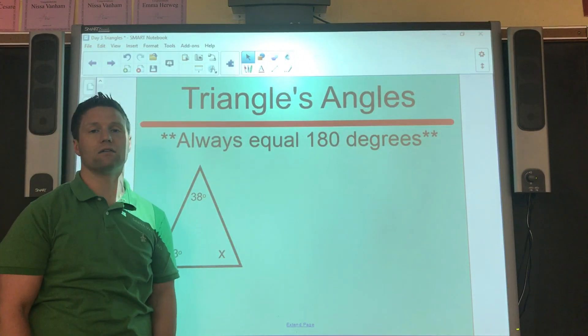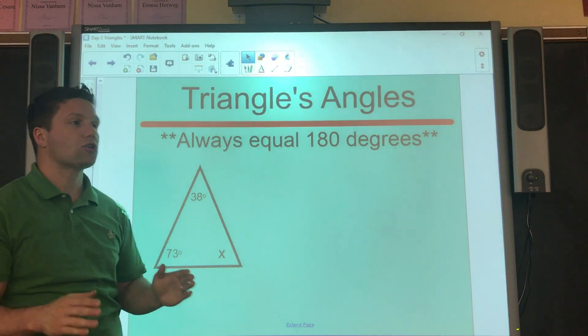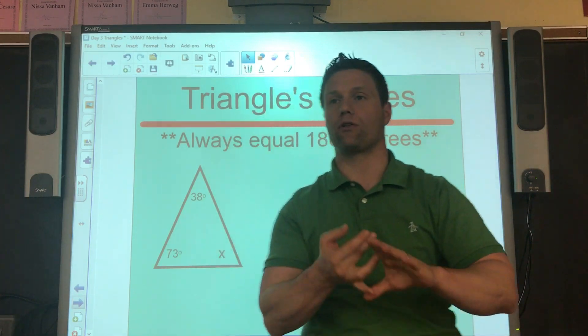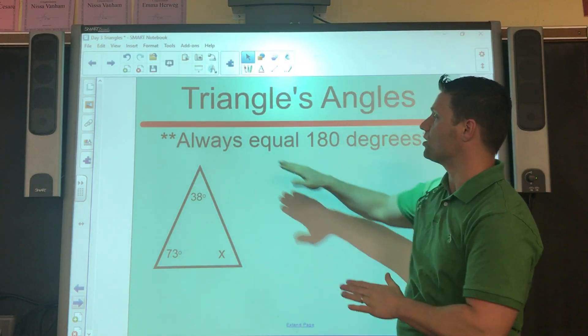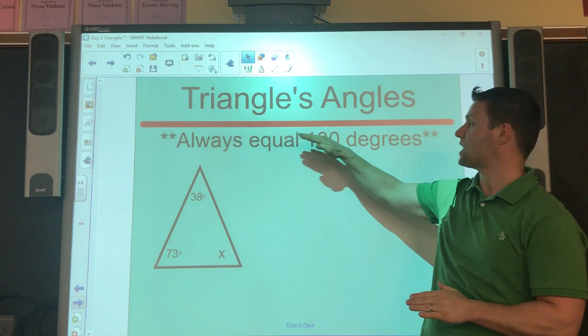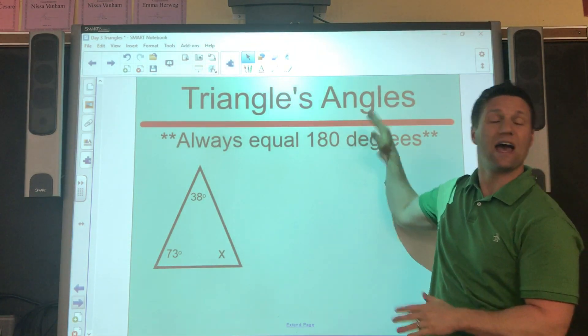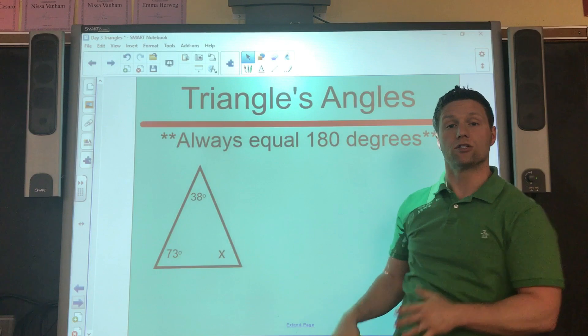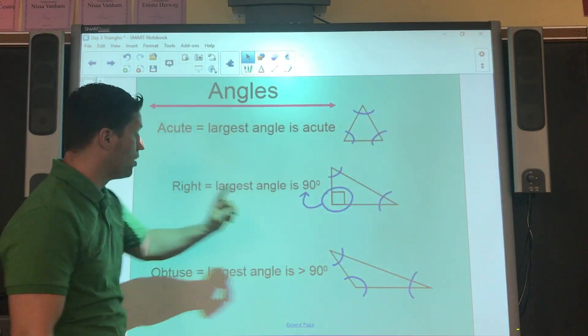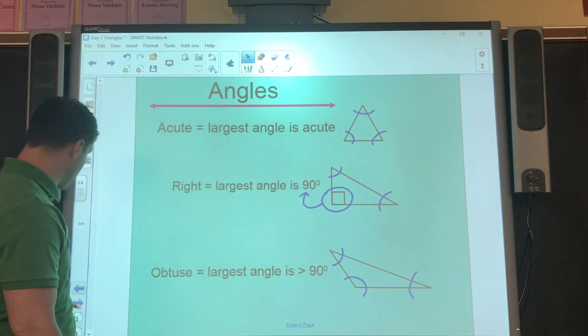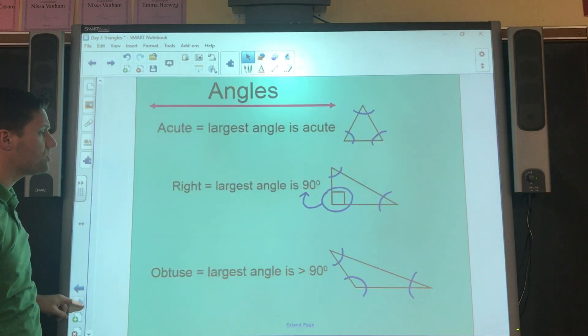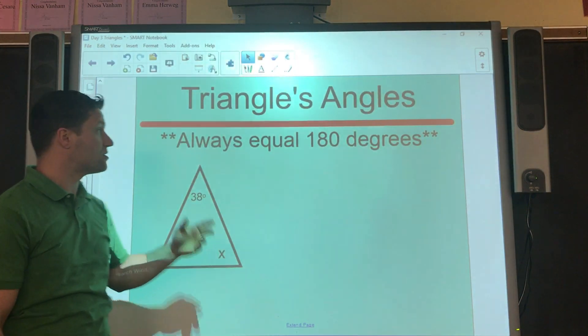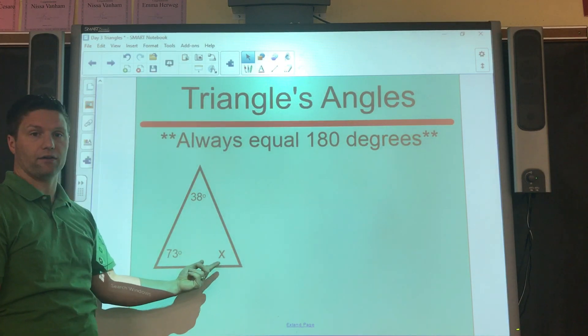How about a triangle's angles? Now, all triangles, whether it's an acute, whether it's a scalene, whether it's a right, whether it's isosceles, all triangles always have angles that add up to 180 degrees. Every single triangle. So, all of these ones that we just went through, 180, 180, 180. The angles are always going to be 180, 180, 180. So, we can use that as a reference to find a missing angle.